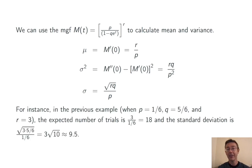For instance, in that last example when p was 1/6, q was 5/6, and r was 3, the expected number of trials needed is 3 over 1/6, or 18. And the standard deviation is 3 root 10, about 9.5.